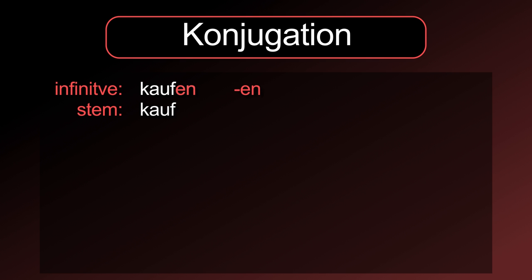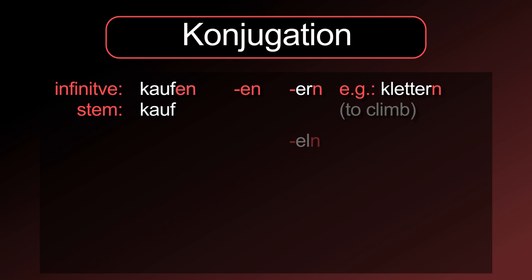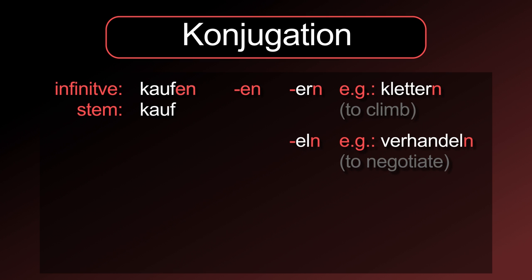The infinitive ending can sometimes be only -n. That is, when the stem ends on -er, for example klettern, or -el, for example verhandeln. The same counts for the number one most important German verb itself: sein.